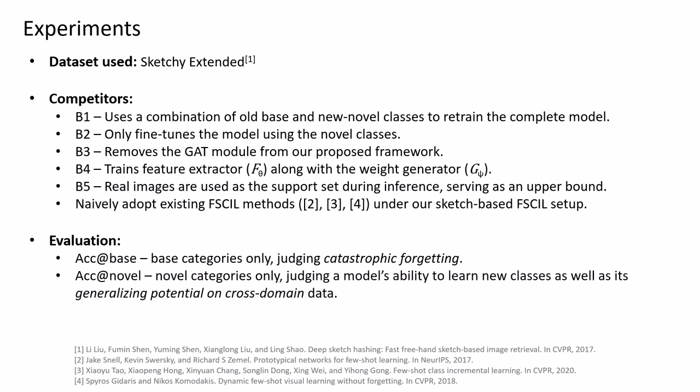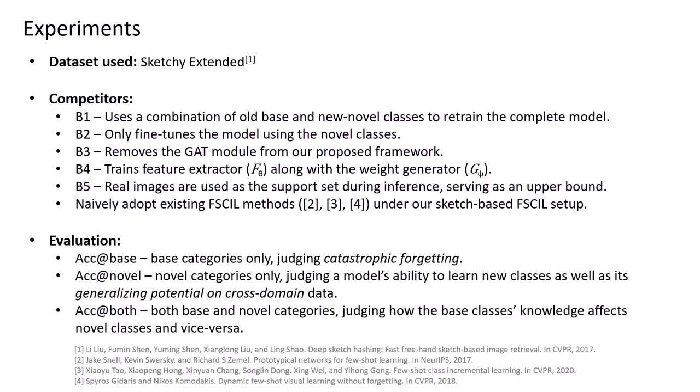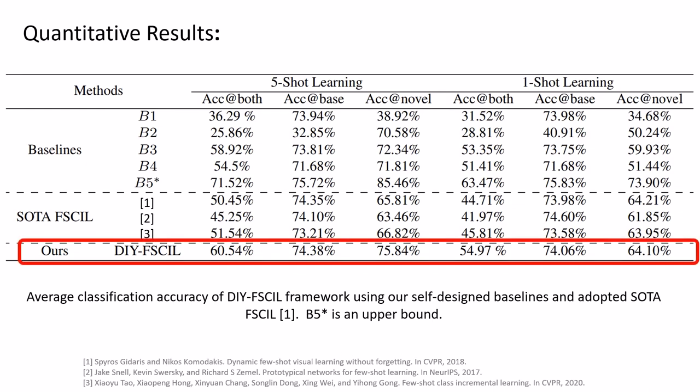We evaluate under three setups: Only on base classes to verify the potential of mitigating the catastrophic forgetting issue. Only on novel classes to verify its capacity of learning them and its generalizability on cross-domain data. On both, to judge how base class knowledge affects novel class one and vice versa. Our method surpasses all existing methods and baselines, except B5 which is an upper bound.